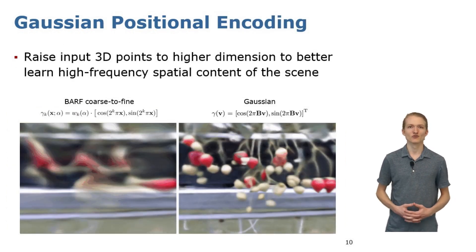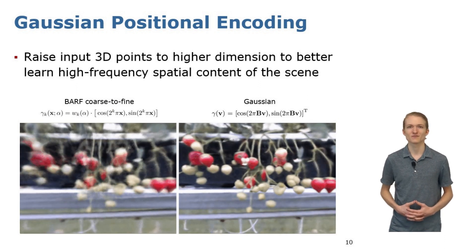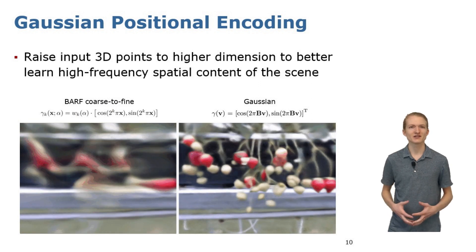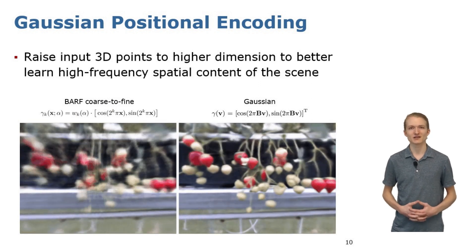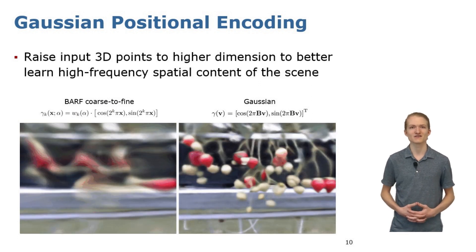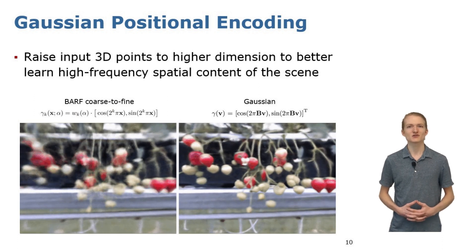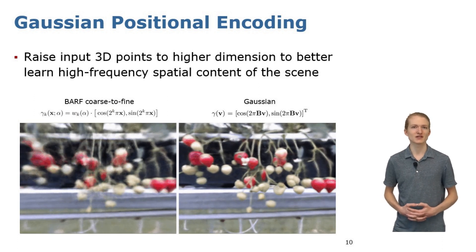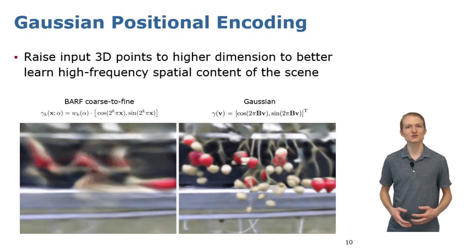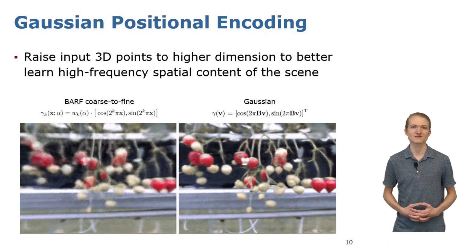Our second improvement over prior works is to leverage Gaussian positional encoding from Tancic et al. Positional encoding raises the dimensionality of input 3D points before passing them to the neural network, which helps the network to more easily learn the high-frequency spatial contents of the scene. Compared to BARF's coarse-to-fine approach, the Gaussian positional encoding allows the network to more quickly converge while still resulting in smooth renderings without missing high-frequency spatial content.